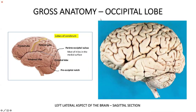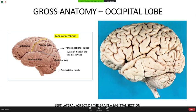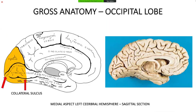Medially, the occipital lobe is limited by the medial longitudinal fissure. On the medial surface, important sulci help delineate the gyri of the occipital lobe: the parieto-occipital sulcus, the calcarine sulcus, and the collateral sulcus. Between the parieto-occipital sulcus and the calcarine sulcus lies the cuneus — the most well-delineated gyrus of the occipital lobe. On the lips and banks of the calcarine sulcus lies our primary visual cortex.